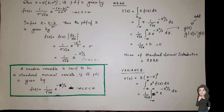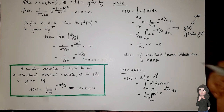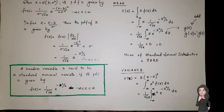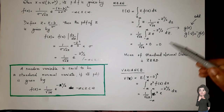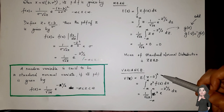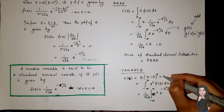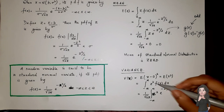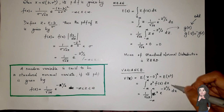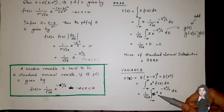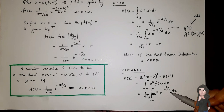Now we are going to find the variance of the standard normal distribution. Variance of Z is V(Z) = E[(Z − mean)²]. Since the mean is zero, this equals E[Z²] = integral from minus infinity to infinity of z² × f(z) dz. Since z² makes the integrand an even function, we can write it as 2 times the integral from 0 to infinity.